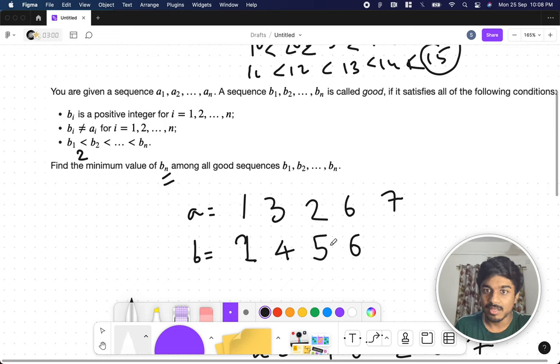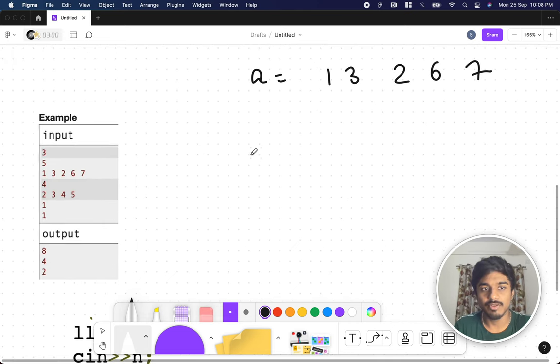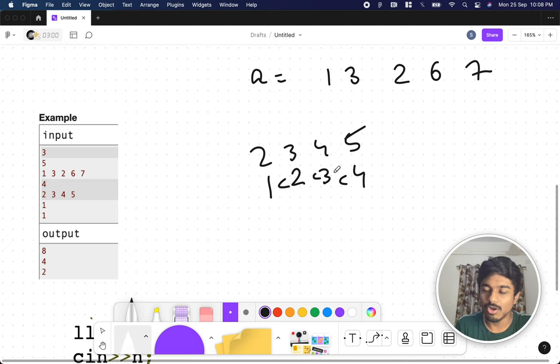If this is 4, the next should be 5 (4 is less than 5), and 5 and 2 are different, so that's okay. Now for 6, 5 is less than 6, but 6 and 6 are the same, so I increment this to 7. Then I have to put 8 or more, so 8 is the minimum possible value. Similarly, for 2, 3, 4, 5: I start from 1, then 2, 3, 4 (1 < 2 < 3 < 4), all are different, so 4 is the minimum value.